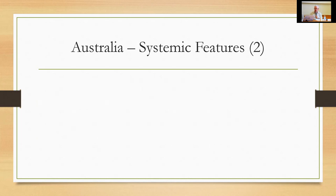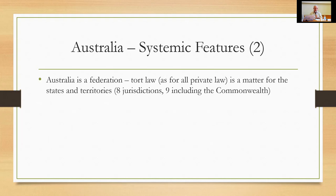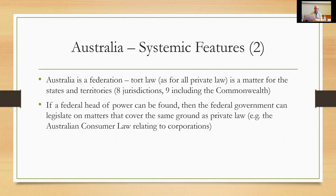Some structural features: Australia is a constitutional federation, and tort law — as for all private law — is a matter for the states and territories, of which there are eight, or nine including the Commonwealth, but it has very limited jurisdiction. If a federal head of power can be found, the federal government can legislate on matters covering private law, including damages — for example, the Australian Consumer Law, but only as it relates to corporations, because corporations is a power given to the federal government.